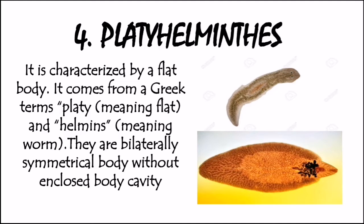Platyhelminthes do not have a body cavity. But as for phylum Chordata, such as humans, they have body cavities, which are the ventral body cavity and dorsal body cavity. The dorsal cavity is located in the posterior surface of the human body, where it is subdivided into cranial cavity, enclosing the brain, and spinal cavity, housing the spinal cord. The ventral cavity is the anterior aspect of the human body, which is made up of the thoracic cavity into the abdomen to pelvic. Platyhelminthes do not have this body cavity in comparison to chordates.